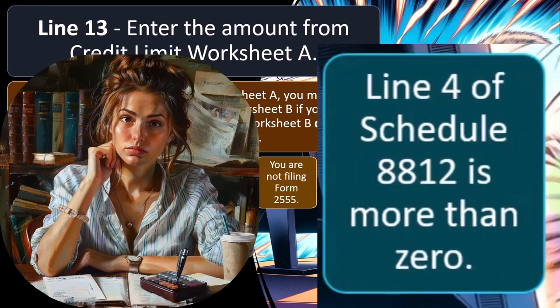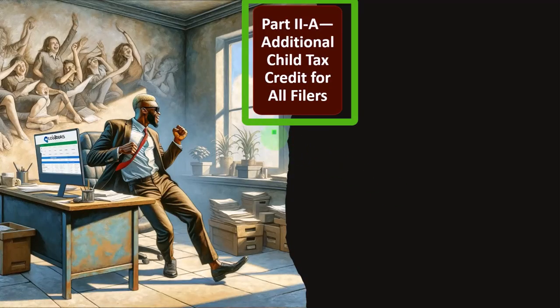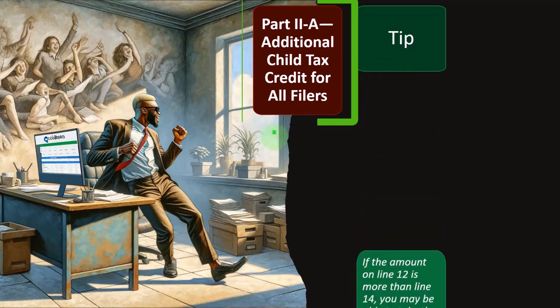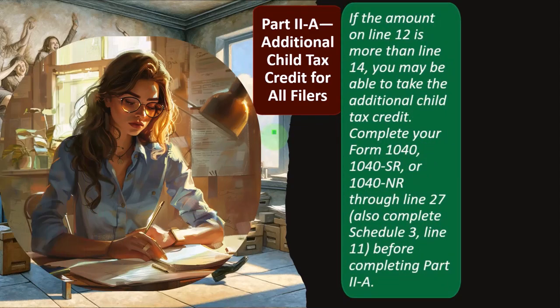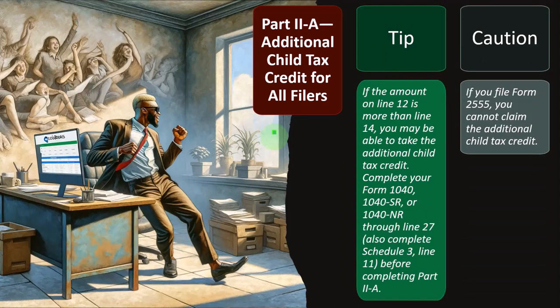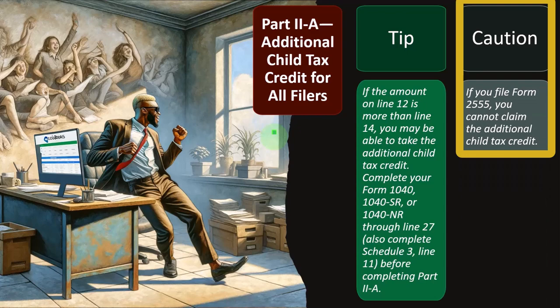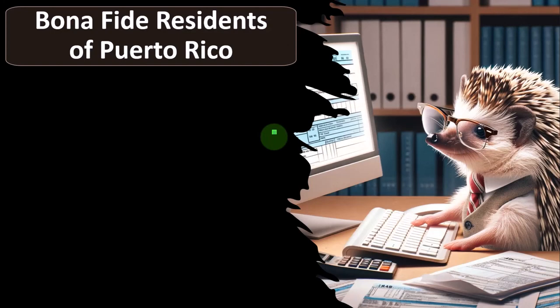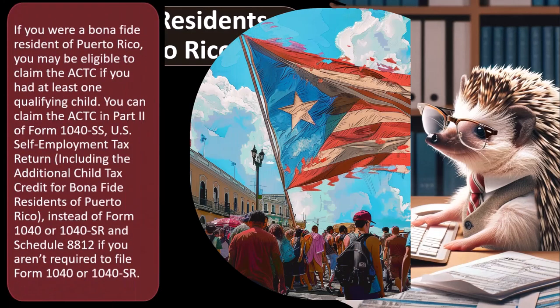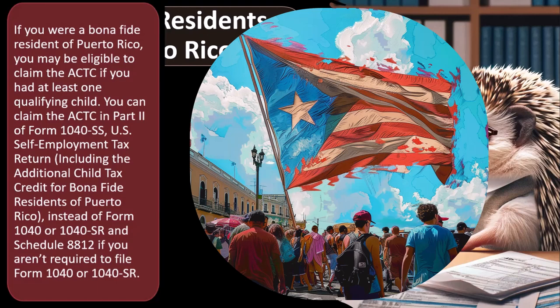Line 4 of Schedule 8812 must be more than zero. Part 2A, Additional Child Tax Credit for all filers: if the amount on line 12 is more than line 14, you may be able to take the additional child tax credit. Complete Form 1040, 1040-SR, or 1040-NR through line 27, and also complete Schedule 3 line 11 before completing Part 2A. Caution: if you file Form 2555 dealing with foreign income, you cannot claim the additional child tax credit.